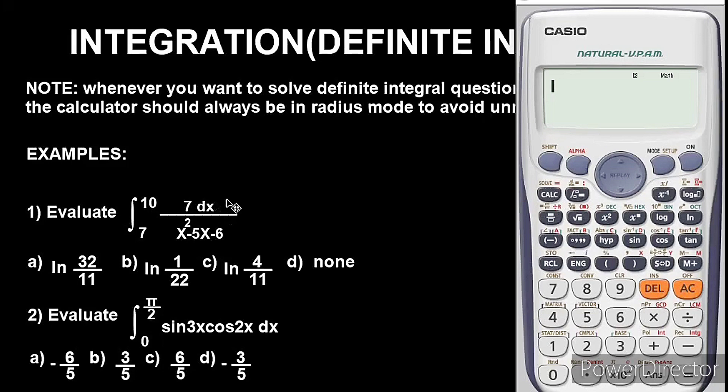What this means is if we are asked to read this question, instead of saying evaluate the integral 7 over x squared minus 5x minus 6, you say evaluate the integral function 7 over x squared minus 5x minus 6. So you will need to include function right within the question.